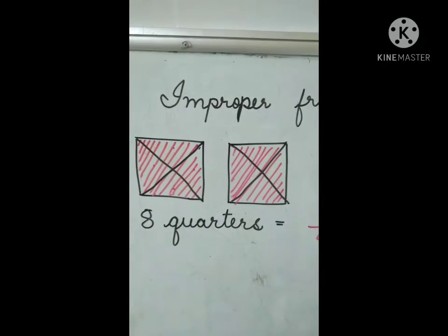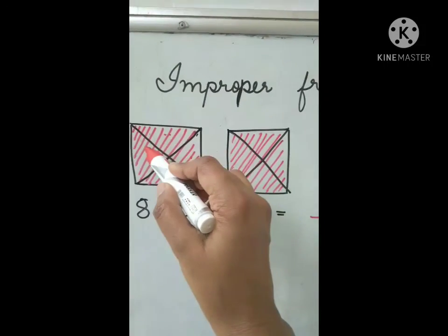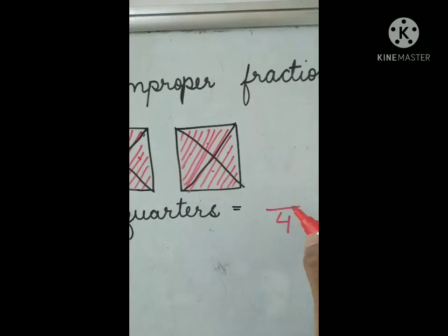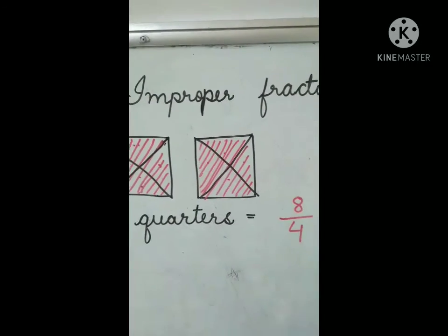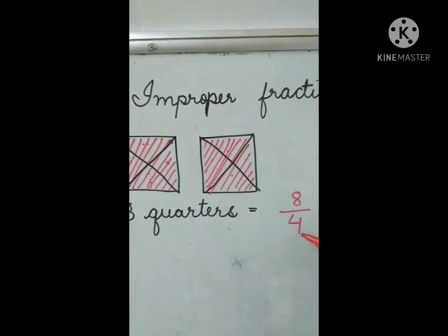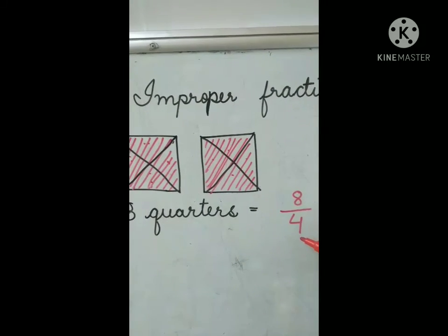Now, count how many parts are shaded. 2, 3, 4, 5, 6, 7, 8. 8 are shaded. So 8 will be the numerator. And we read it as 8 quarters. When 4 is there in the denominator, we read it as quarters.